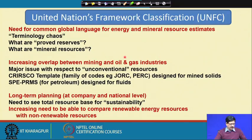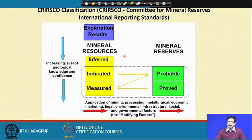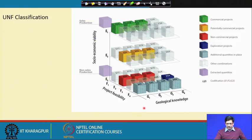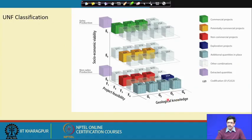The UNFC has certain advantages over the previous classification scheme, where only two parameters — geological certainty and economic viability and feasibility — were combined together, and mineral resources were classified as seen in the McKelvey box. The previous standard was the CRIRSCO — Committee for Mineral Resources Reserves International Reporting Standards — which covered mining, processing, metallurgical, economic, marketing, legal, environmental, infrastructure, and social and governmental factors. The UNFC classification adopted three separate axes: socio-economic viability, project feasibility, and geological knowledge.